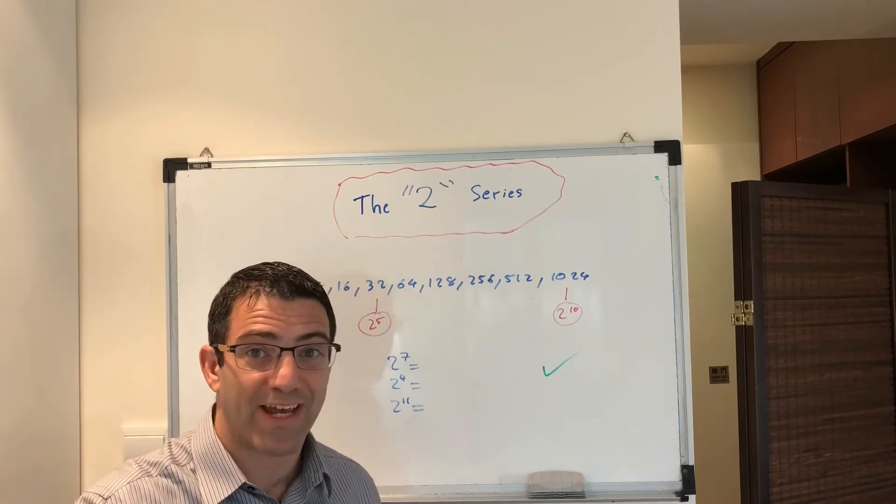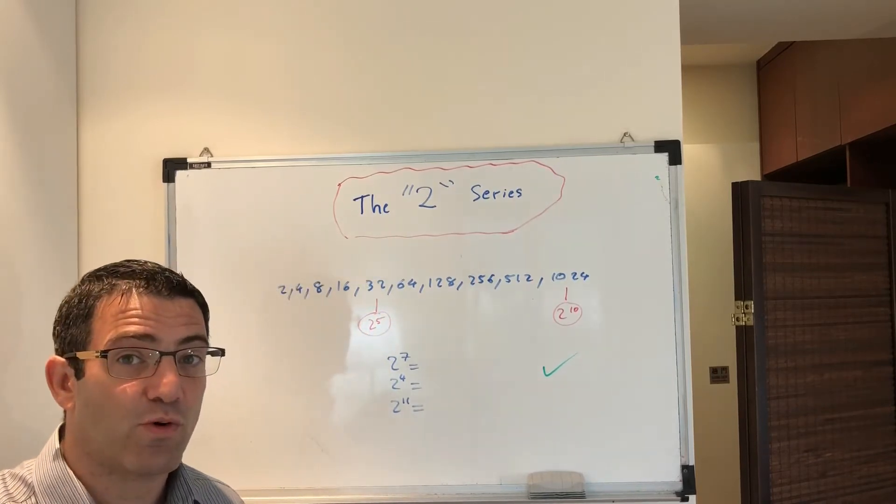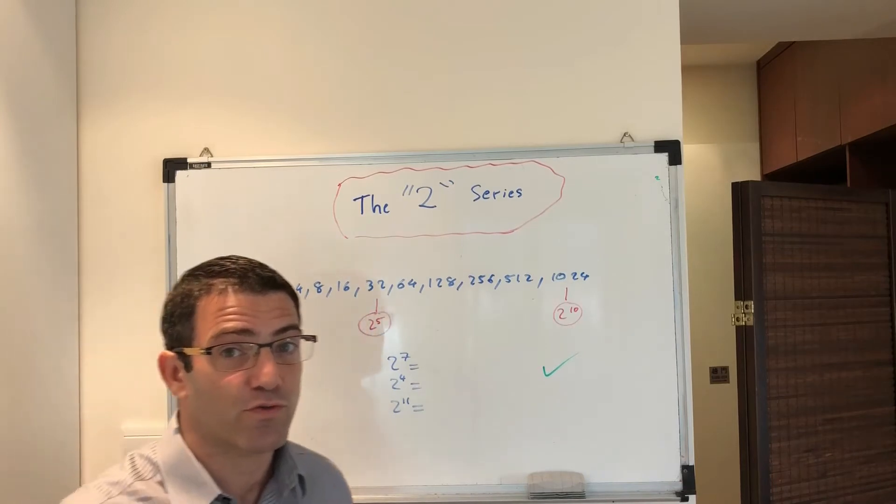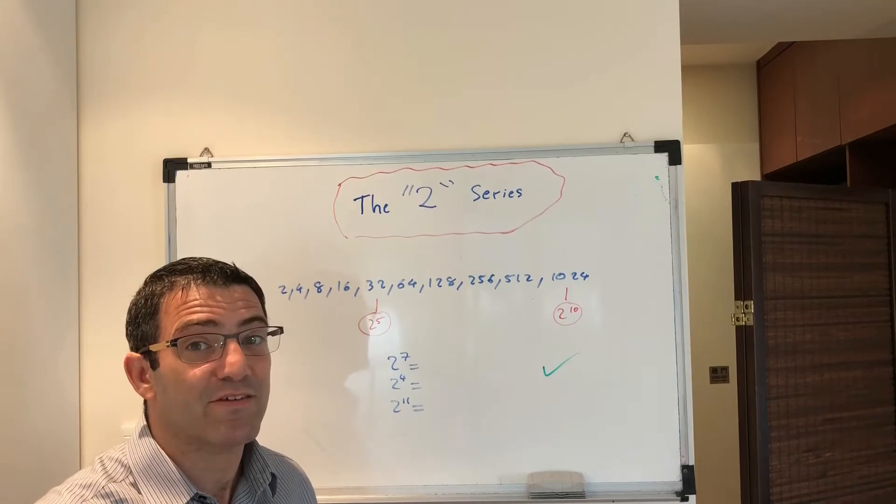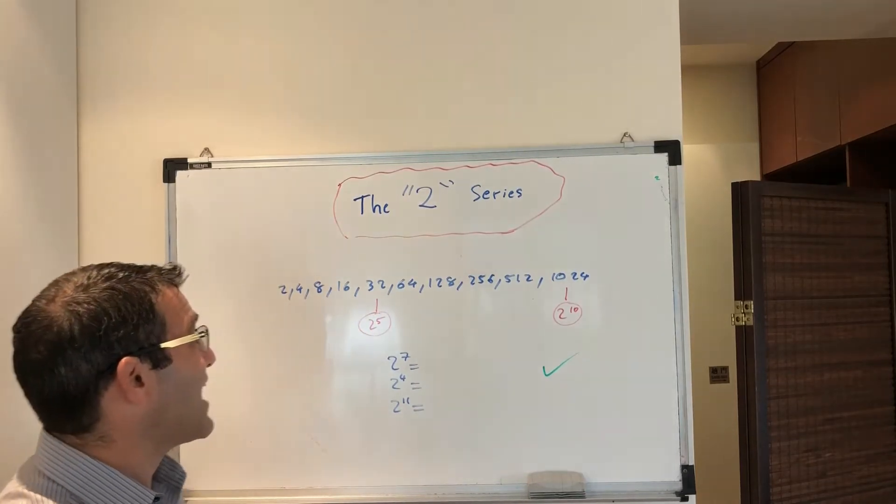So you can go 2, 4, 8, 16, 32, 64, 128, 256, 512, 1024. And then go down again. 1024, 512, 256, 128, 64, 32, 16, 8, 4, 2.